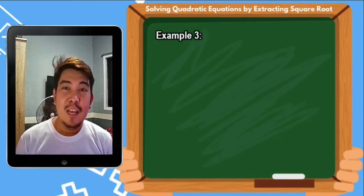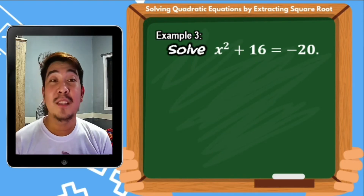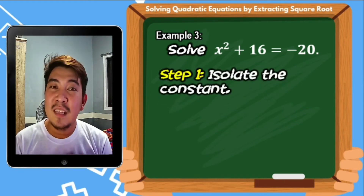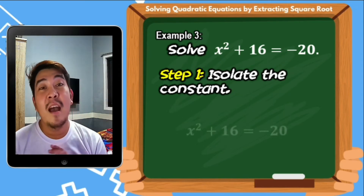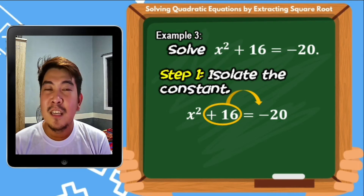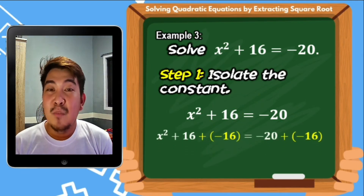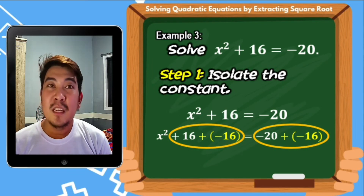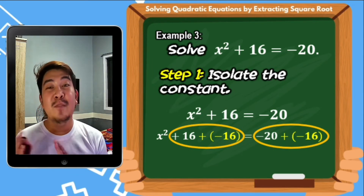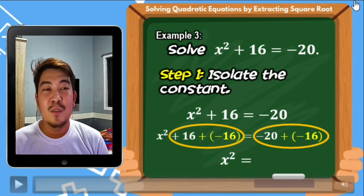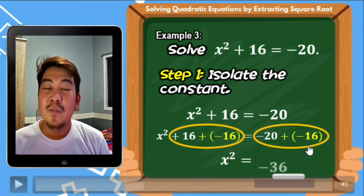Example number 3: solve x squared plus 16 equals negative 20. First step: isolate the constant. The constant is 16, so we transfer it to the other side. Using the addition property, we add negative 16 to both sides. So 16 plus negative 16 equals 0, and what remains on the left is x squared. On the right, negative 20 plus negative 16 gives us negative 36.